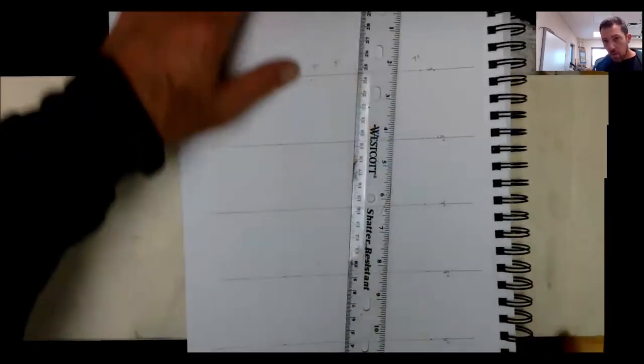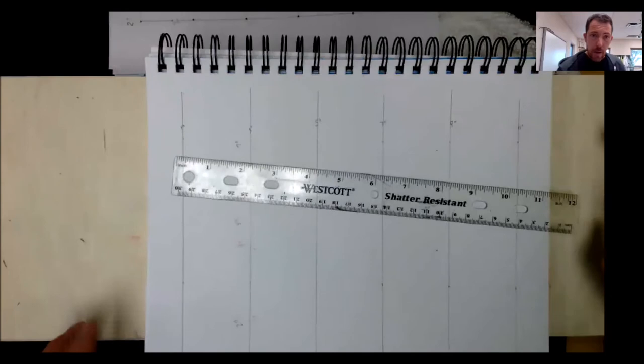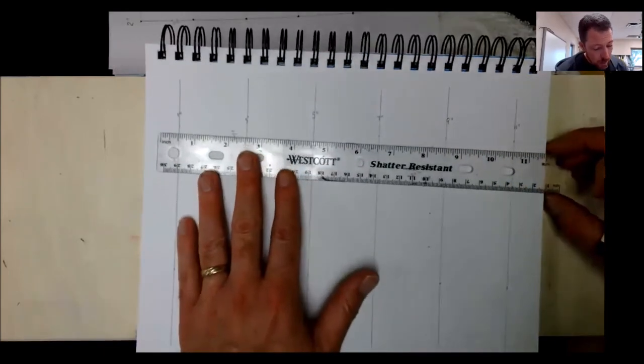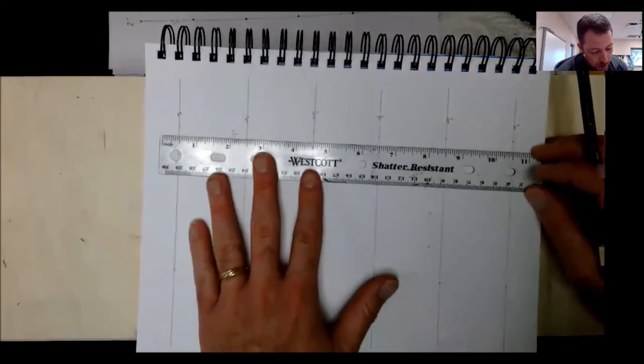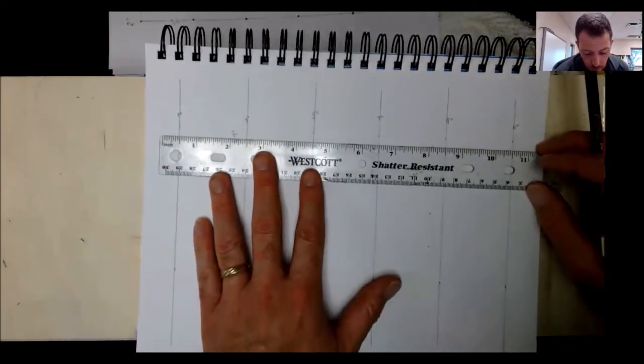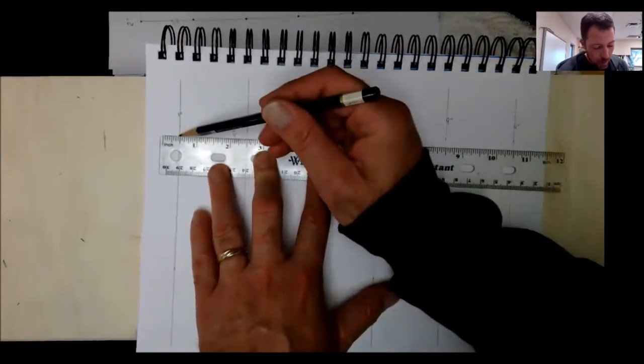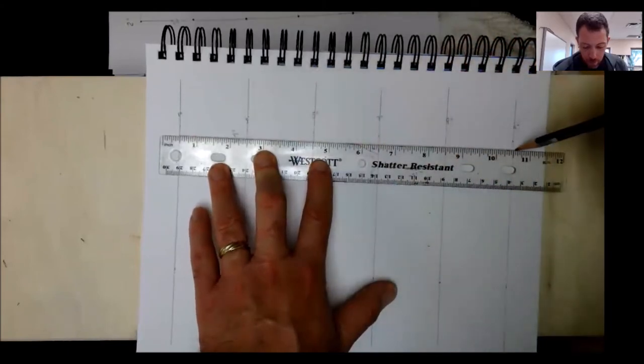And then what I'm going to do, I'm going to draw my lines across. But I'm going to start here and I'm going to end here because I know I'm not going to use the ends of the piece of paper for anything.